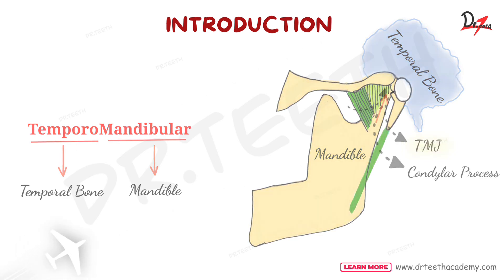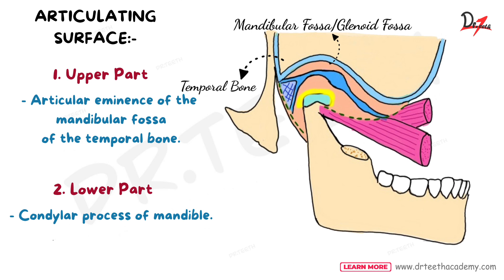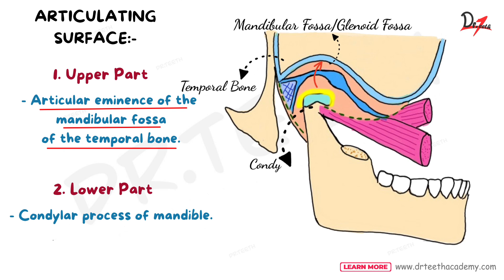Now let's see the articulating surfaces. In the upper surface we have the temporal bone. We can also see a fossa in the temporal bone — this fossa is the mandibular fossa or the glenoid fossa. In this fossa the condyle of the mandible articulates. So the upper articulating surface is formed by the mandibular fossa of the temporal bone, and the lower articulating surface is formed by the condylar process of the mandible.